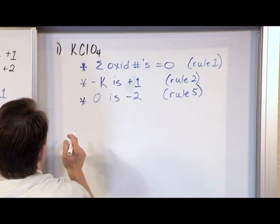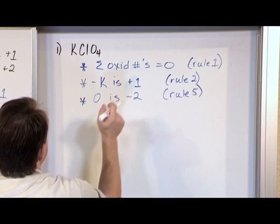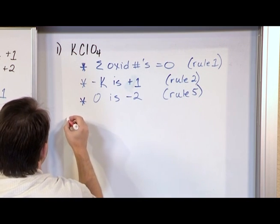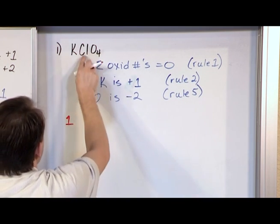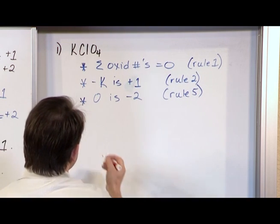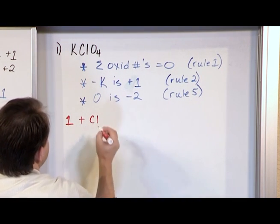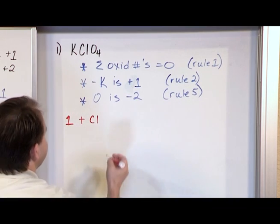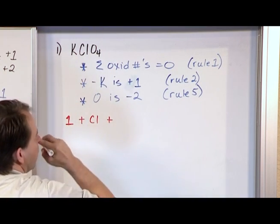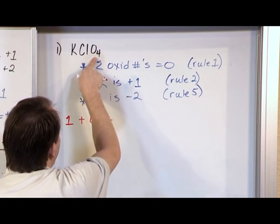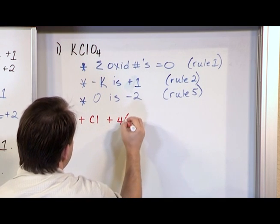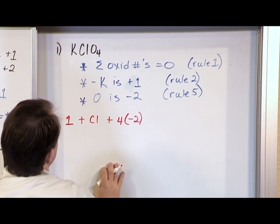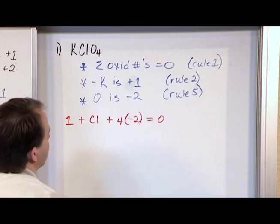So let me see if we can use this. What is the oxidation number of potassium here? We just said it was plus one, so I'm going to say one. What is the oxidation number of chlorine? I don't know what it is, so I'm going to add to it. I'm just going to put Cl there because I don't know what that oxidation number is. What is the oxidation number of oxygen? Well, it's negative two, but I have four atoms here, so I have to say four atoms times negative two for each one. And all this stuff has to be equal to zero.